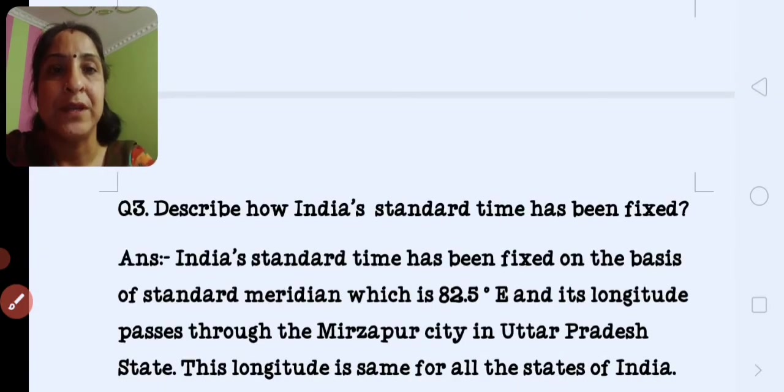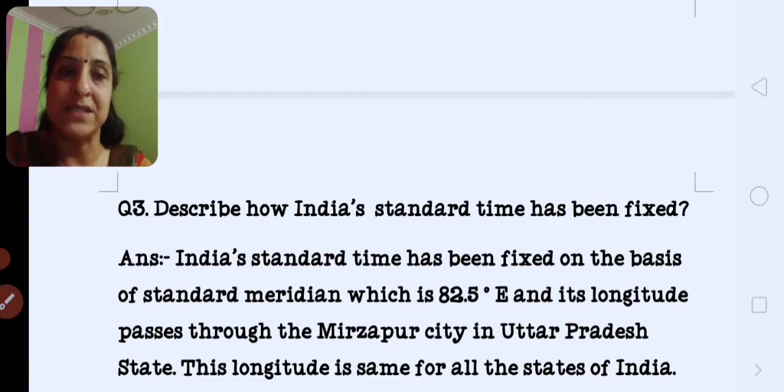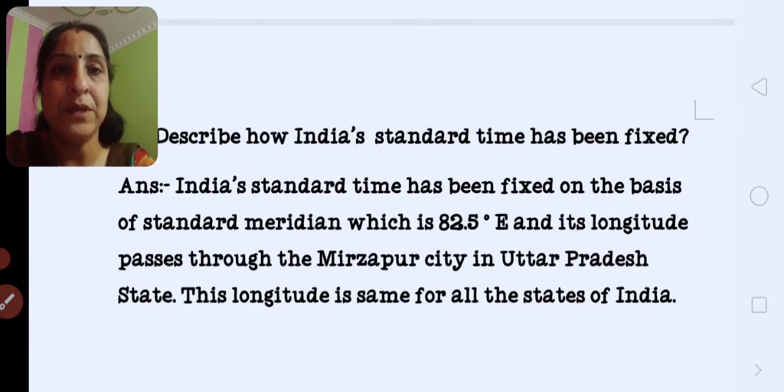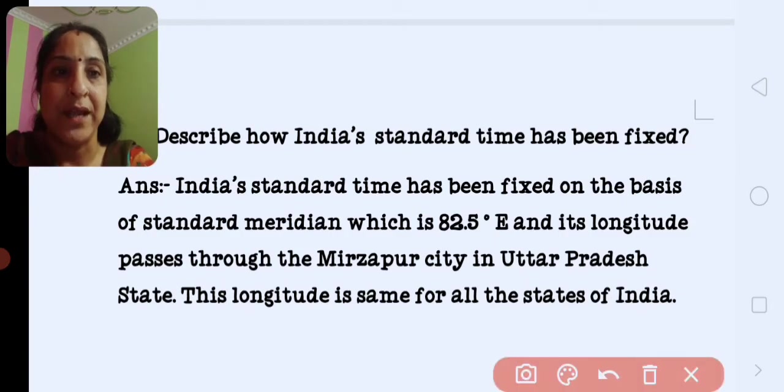Next is describe how India's standard time has been fixed. India's standard time has been fixed on the basis of the standard meridian, 82 degree 30 minutes east. Its longitude passes through the Mirzapur city in Uttar Pradesh.